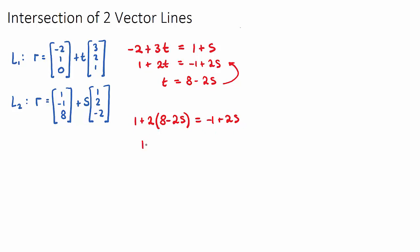If I expand this bracket: 1 plus 2 times 8 is 16, and then minus 4s is equal to negative 1 plus 2s. I will bring the negative 4s over and add it to 2s, so 6s.